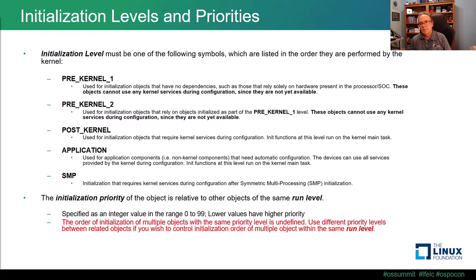Pre-kernel 1 and 2 are used before the kernel is running, meaning objects at these levels cannot make any kernel service calls. Post-kernel, application, and SMP are free to make any kernel calls as they run from the main thread entry routine. The key takeaway is that between run level and initialization priority, the user has significant control over sequencing. However, the order of initialization for multiple objects with the same priority at the same run level is undefined and cannot be relied upon.